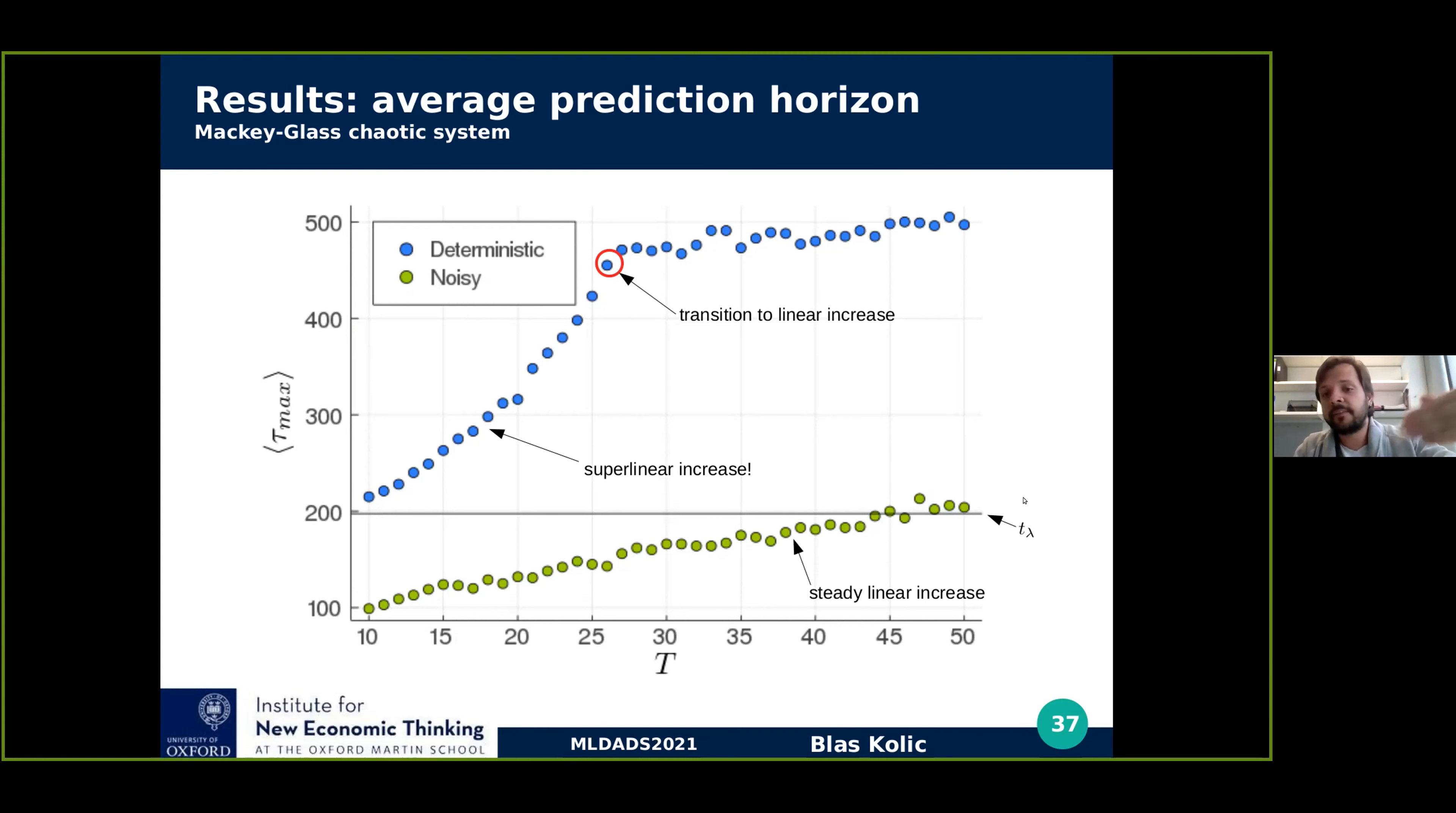And in the noiseless case, we see two things. First, that there's a regime in which we have a super linear improvement on the accuracy prediction. So every extra observation is super linearly good. And then there's a transition to a linear increase in the accuracy of observations at a point around 25 observations on. And so there's a regime in this middle part in which there should be a continuum between one and the other for lower levels of noise.